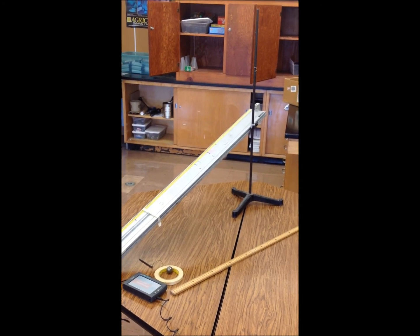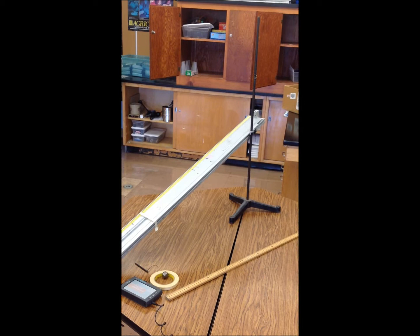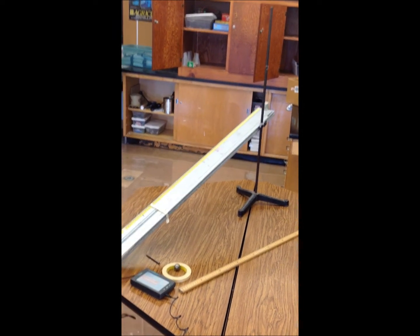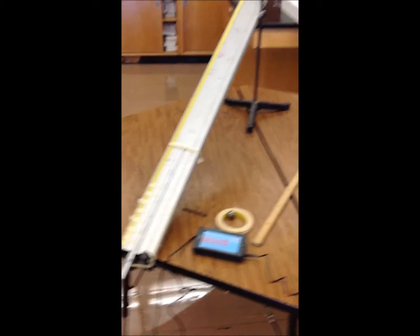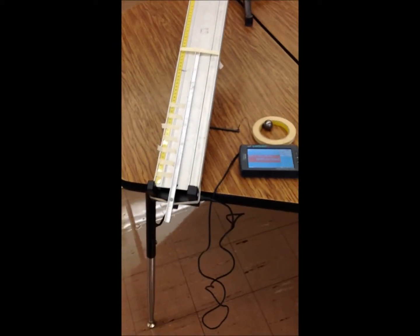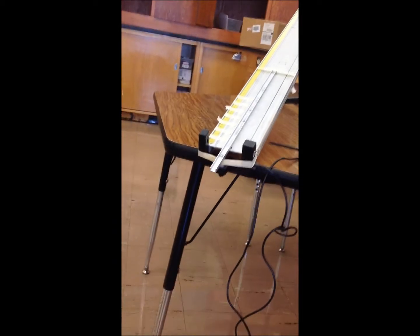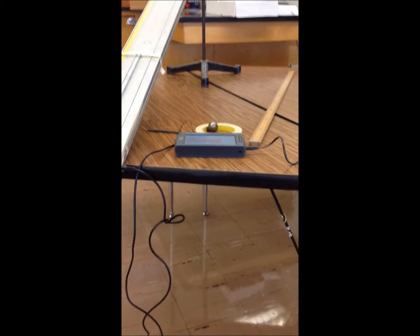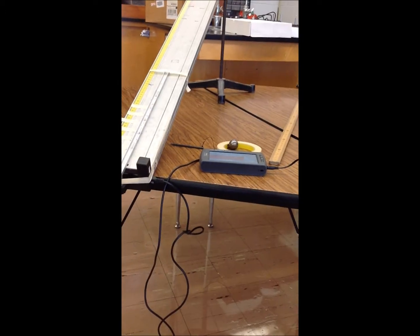The distance versus velocity activity setup consists of the following: You have a stand with a one meter track with a smaller rail attached to the track. This should all be set up for you. And you have a photogate here on the end of the track.